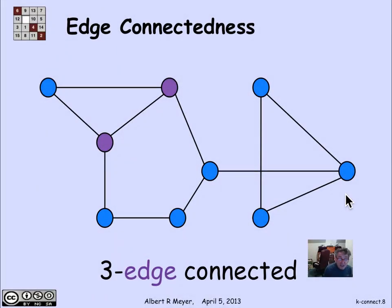For a three edge connected example, we can look at these two vertices highlighted in purple and discover that we can remove any two edges, and they're still going to be stuck together. You can kind of see that because they're in a cycle here and in a cycle there. And in order to break them, you're going to have to break both cycles, which means breaking two edges to break two cycles.